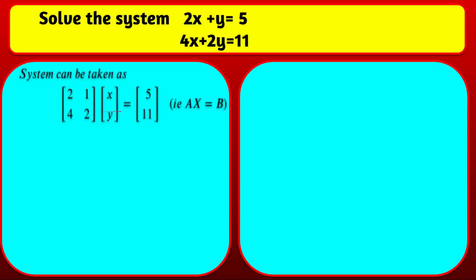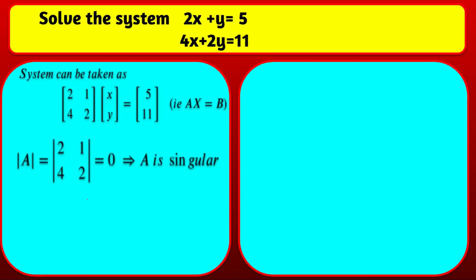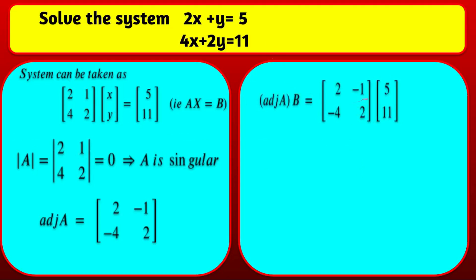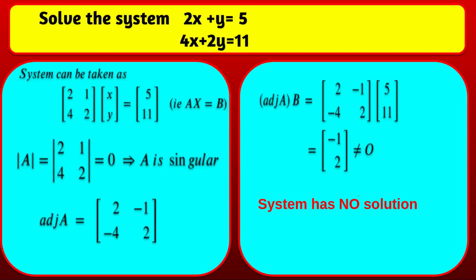Example 3: The system is written in AX = B form. Finding the determinant of A gives 0, so A is singular. Since det(A) = 0, compute adj(A)·B. The result is not equal to the zero matrix. Therefore, the system has no solution — it is inconsistent. Had adj(A)·B equaled zero, the system would have infinitely many solutions.